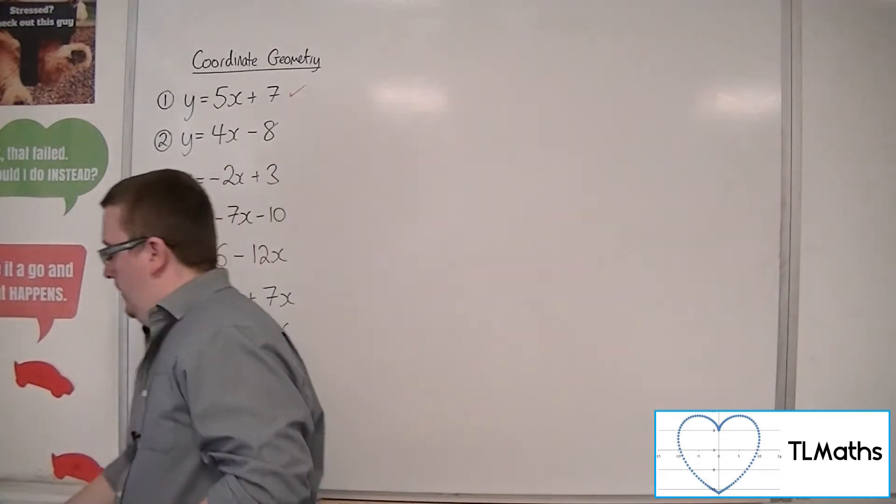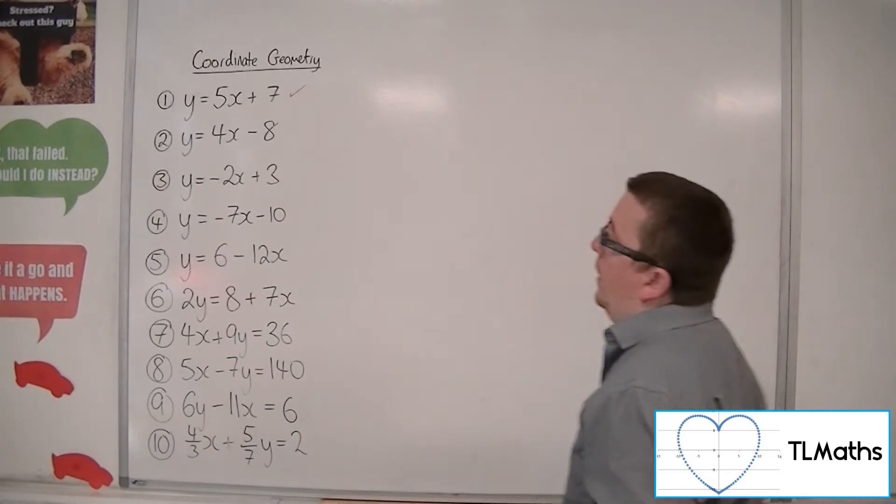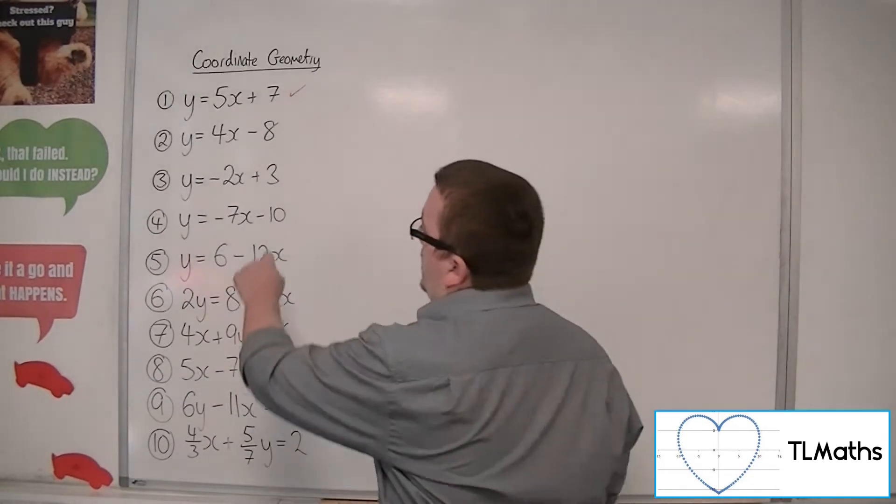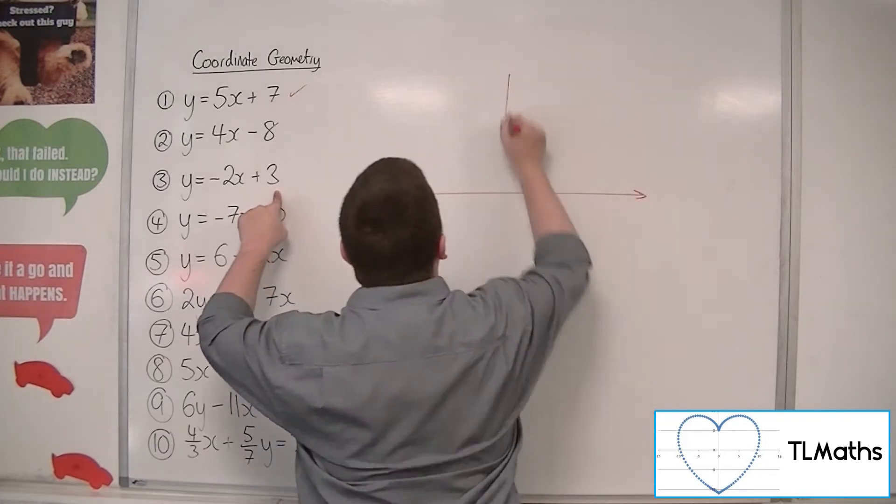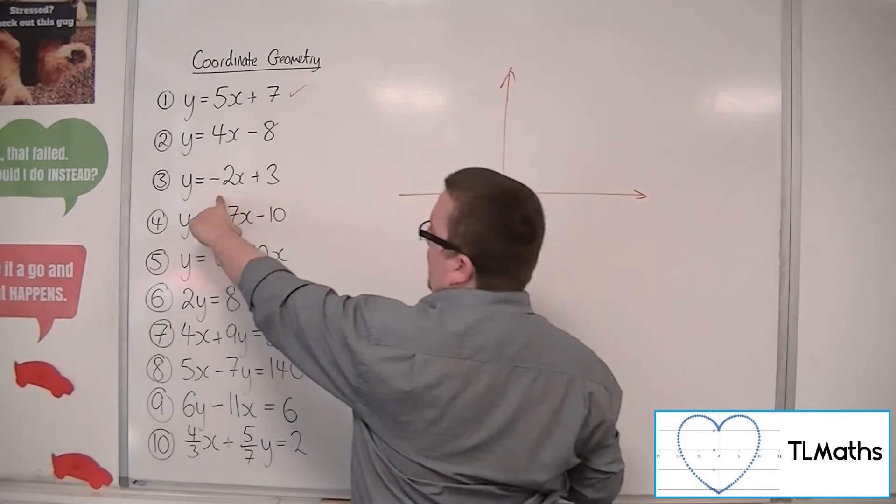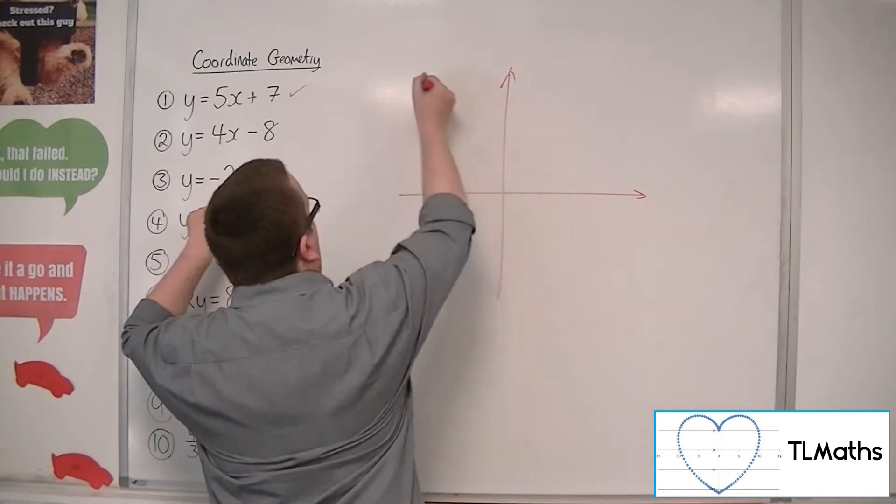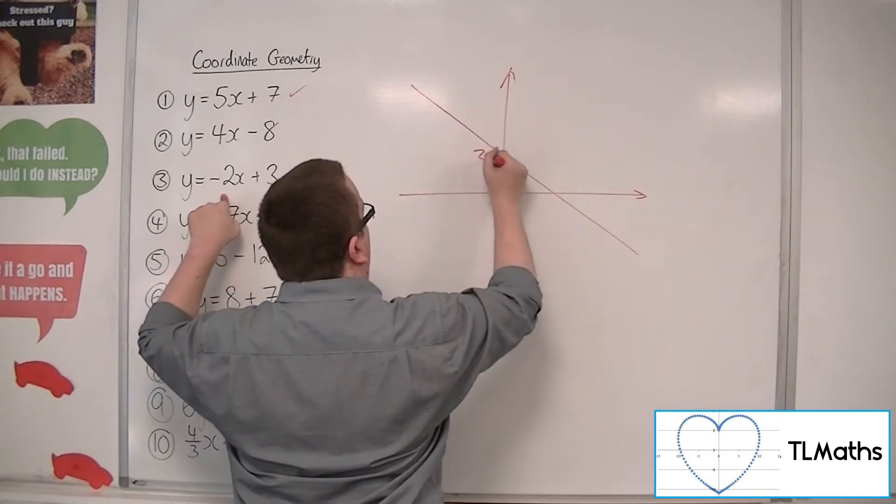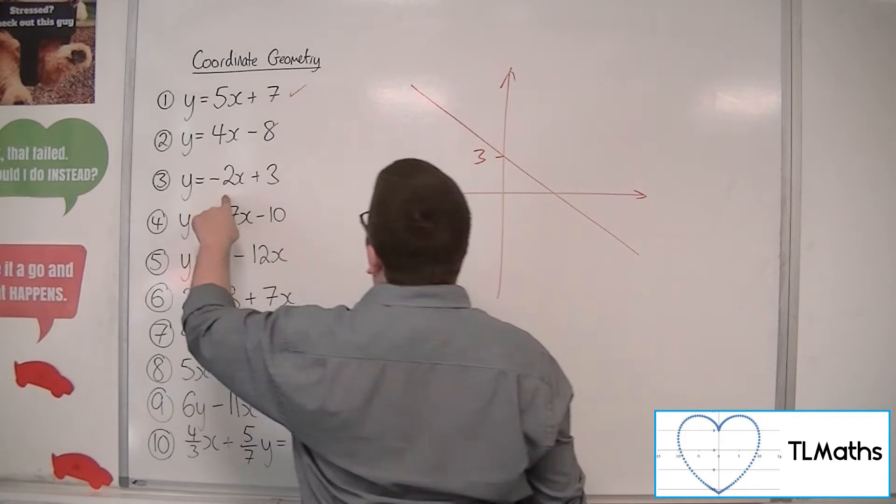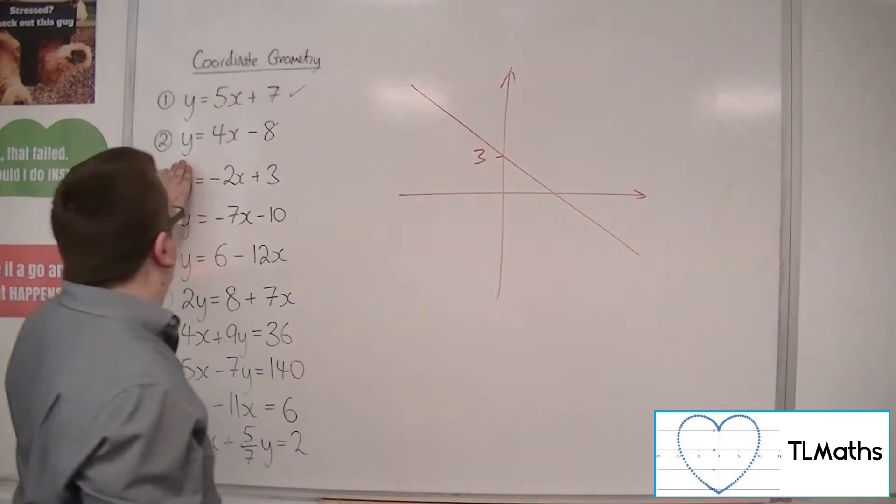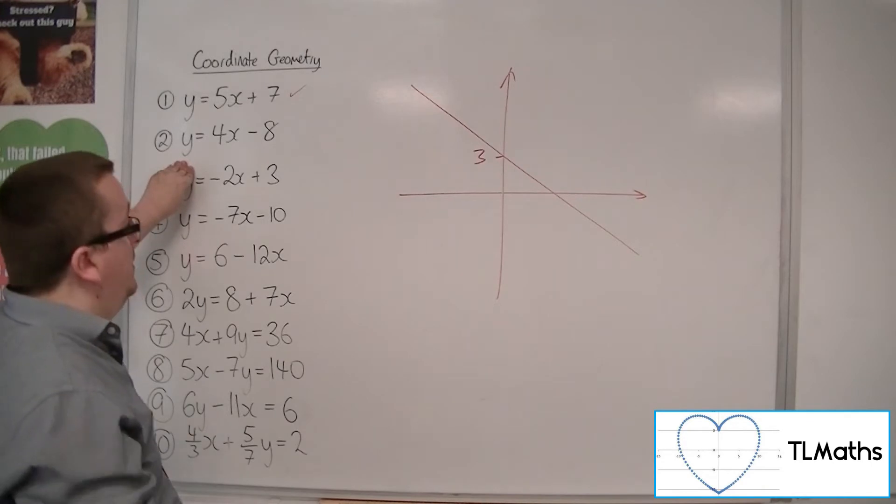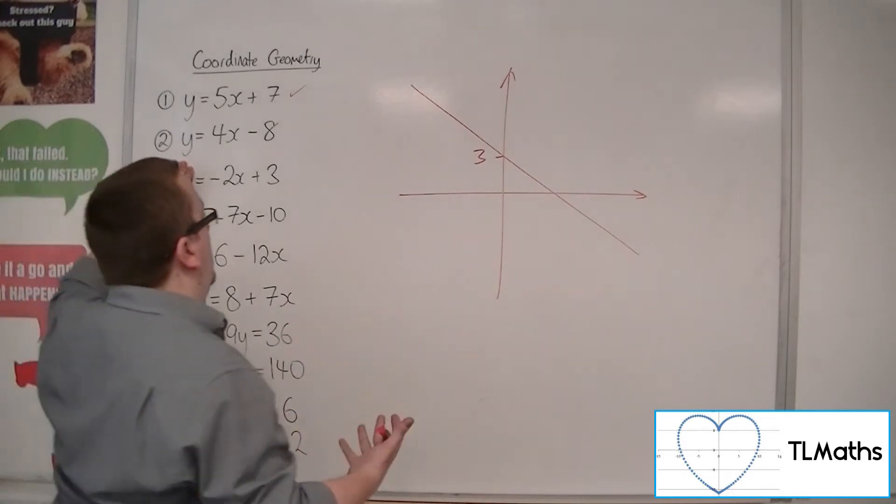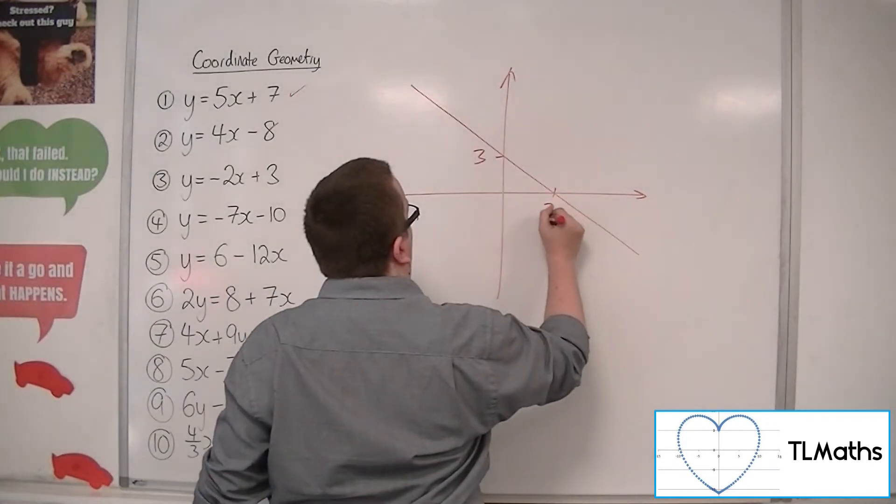Now, number 3, y is equal to minus 2x plus 3. So it's going through 3 on the y-axis. We've got a negative gradient this time because it's minus 2. So if it's going through 3, it's got a negative gradient of minus 2. So when y is 0, I could add the 2x to both sides, so I'll get 2x equals 3, divide both sides by the 2, so I get 3 halves. So that must be 3 halves.